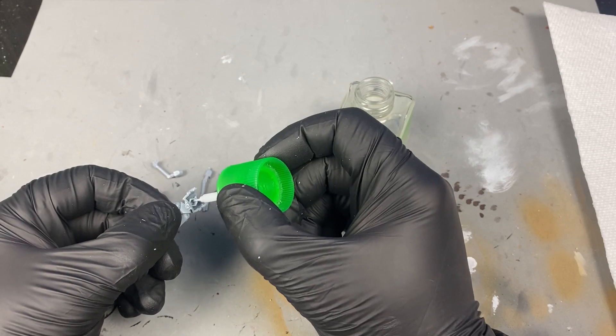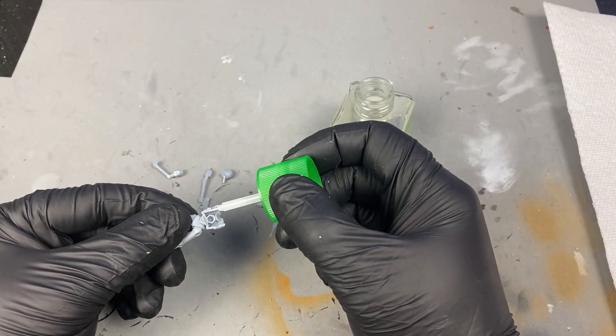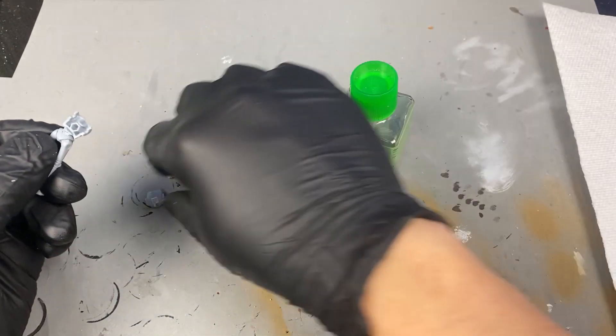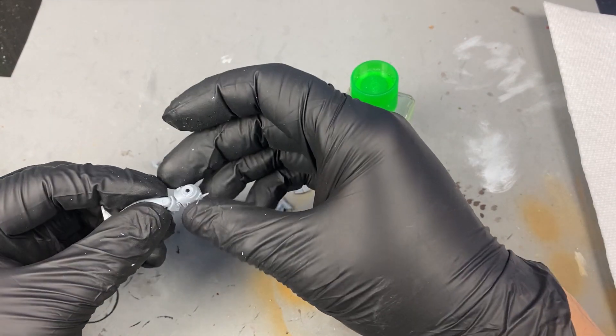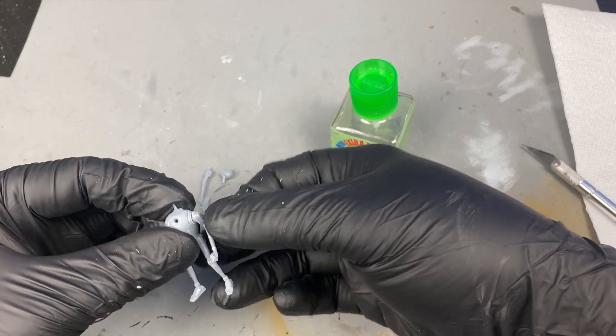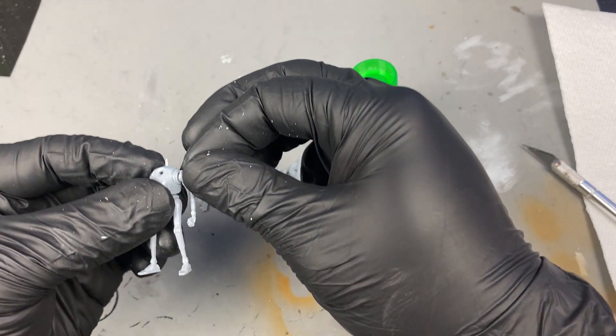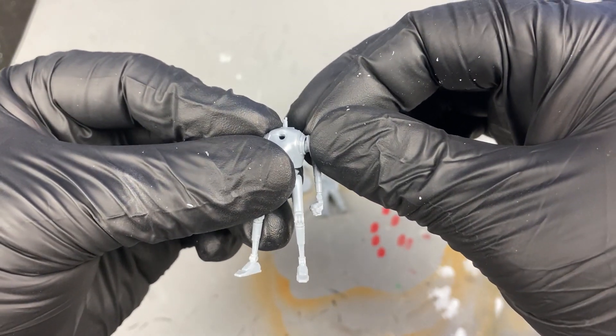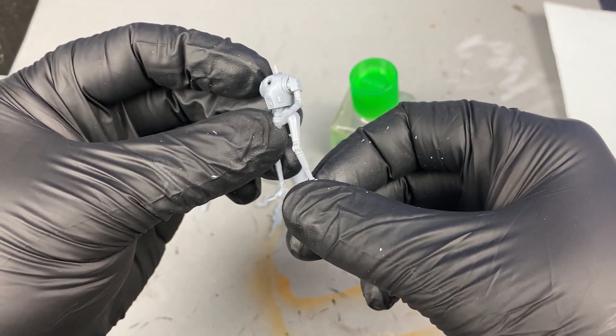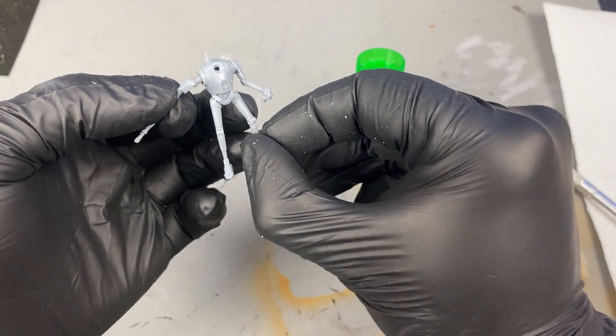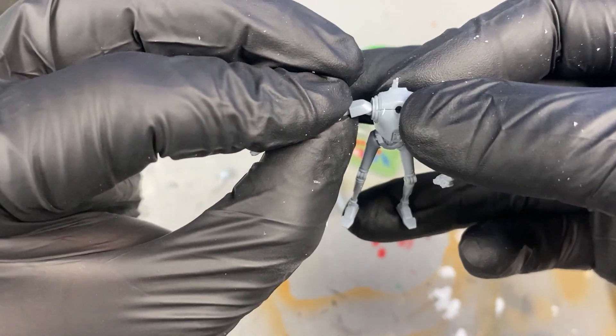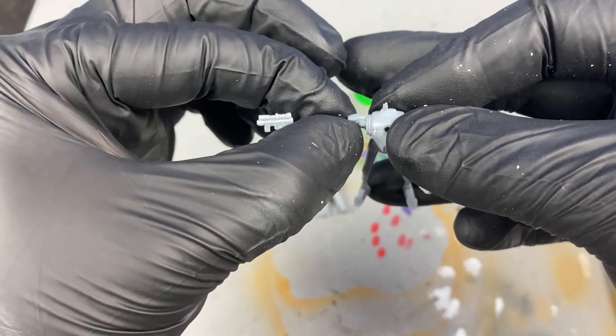Taking the blade edge, I carefully cut away the larger sections of sprue left on the feet. This area won't be seen, so if I cut into the model accidentally, it will be okay. For anything a little more finesse, I would use the back of the blade so as not to actually cut away any of the base material.